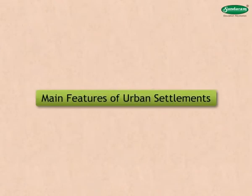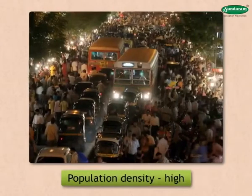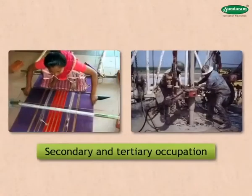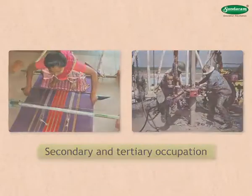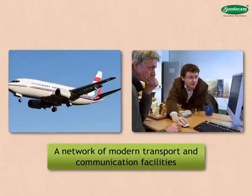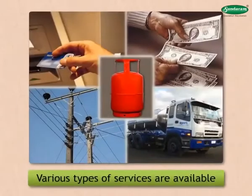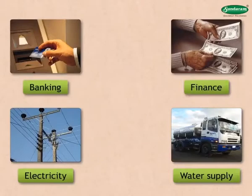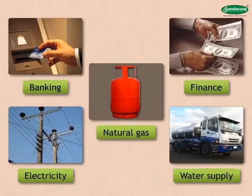Some of the main features of urban settlements are: population density is high; most of the people are engaged in secondary and tertiary occupations; a network of modern transport and communication facilities is available in large numbers; and various types of services like banking, finance, water supply, electricity, and natural gas are available.